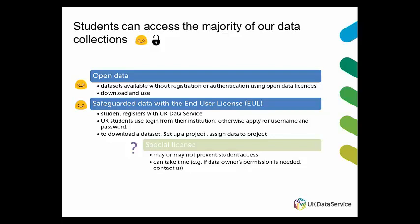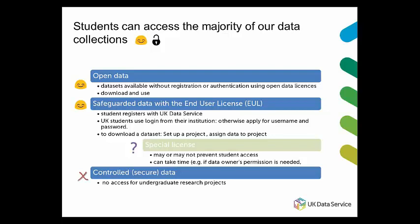Special conditions vary and may or may not prevent student access, so read the conditions carefully. In some cases fulfilling the conditions can take time — for example, sometimes we have to go back to the data owners for permission, which can be a problem when working to a deadline. Finally, controlled data relates to data where participants could possibly be identified, and access to controlled data is limited — it isn't available to undergraduate students doing research projects.